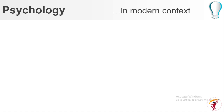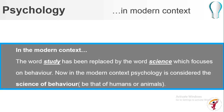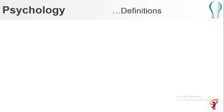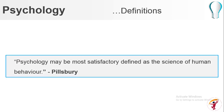In the modern context, the word 'study of human mind' has been replaced by the word 'science', which focuses on behavior. So in the modern context, psychology is considered the science of behavior — of humans or animals. Pillsbury says: 'Psychology may be most satisfactorily defined as the science of human behavior.' This is a very simple definition you can use in your period exams and also in your teaching lectures.